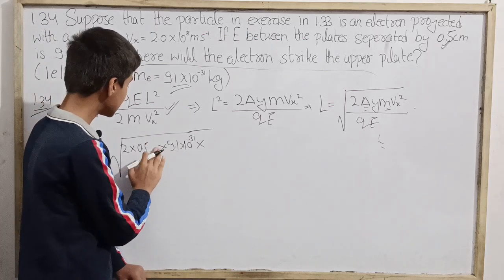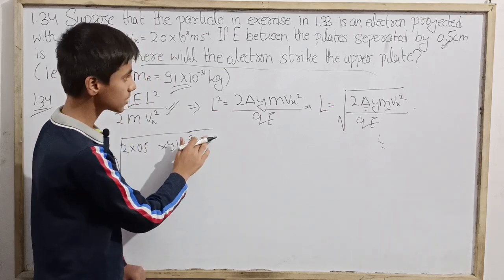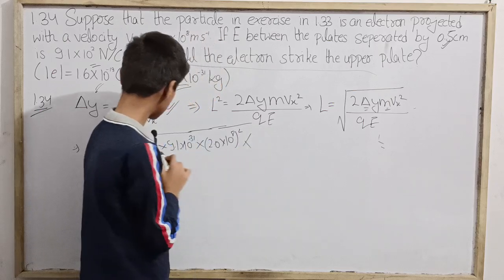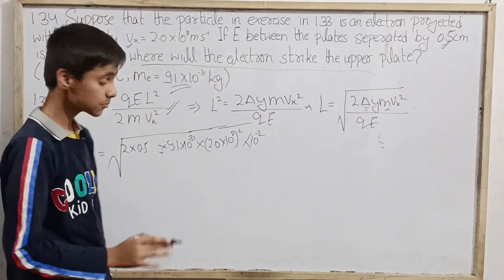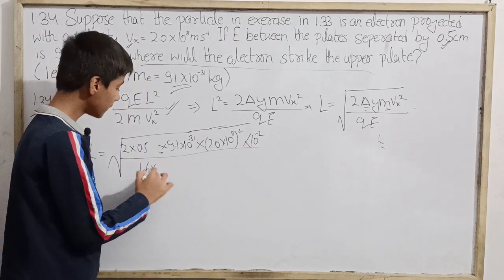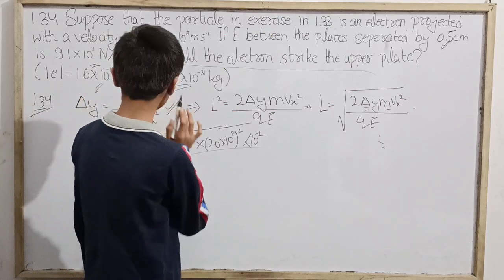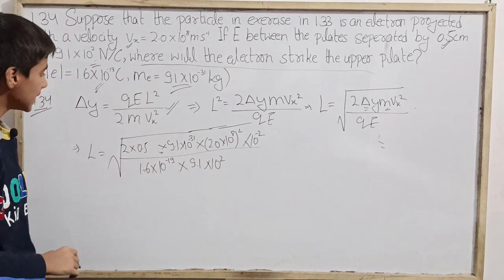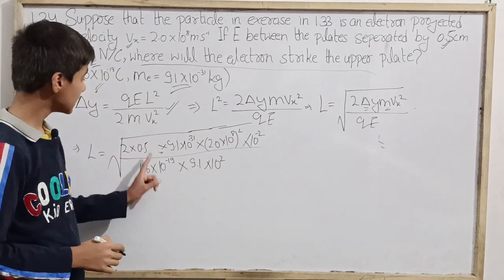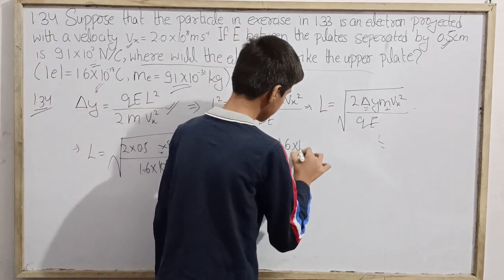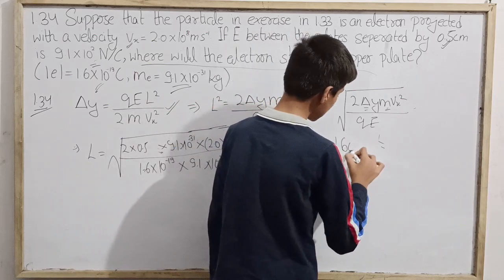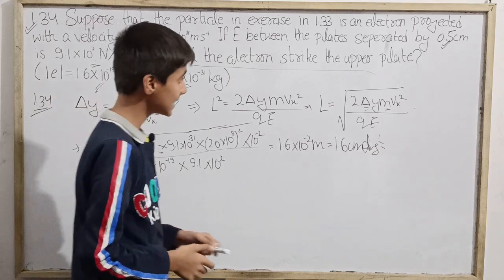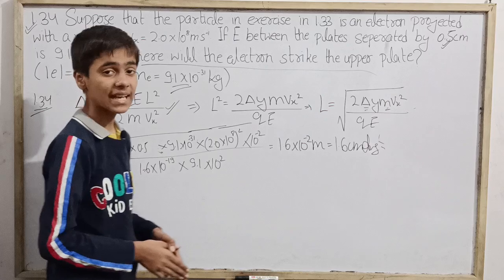Remember we have to put all the values in SI units, so 0.5 cm will be 0.5 times 10^-2. Let me write vx, which is 2.0 times 10^8 squared, times 0.5 times 10^-2, over 1.6 times 10^-19 into our electric field which is 9.1 times 10^2. This is 1.6 times 10^-2 meter, which is only 1.6 centimeter. So there it will strike the upper plate.